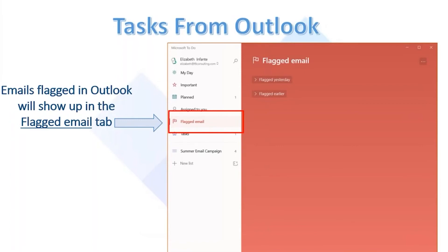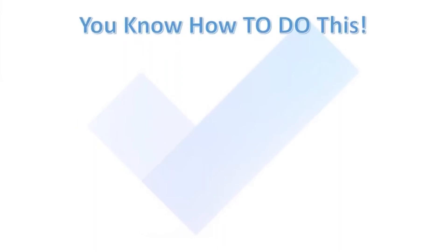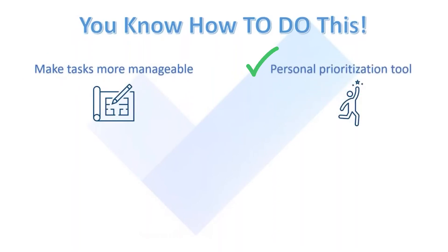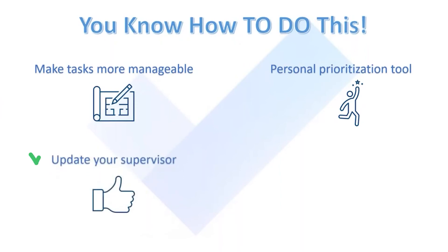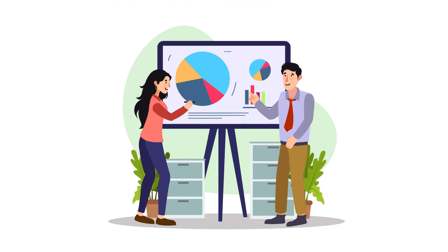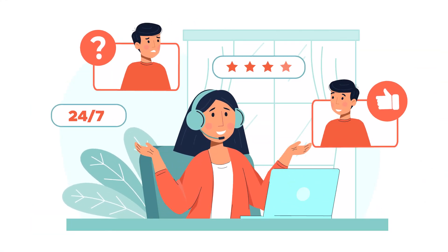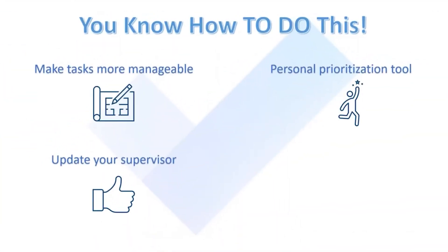Another thing you can do — above Flagged Emails you'll see Important. You can star certain tasks and put them in that Important list. Those are things that are urgent, that you have to get done by the end of today. Now you know how to do this — you can make your tasks more manageable in this tool. You're going to use it for your personal prioritization — managing yourself, not a team or managerial tool. You can update your supervisor by sending them your to-do list to show how you broke down a project and how you're going to get it done on time.